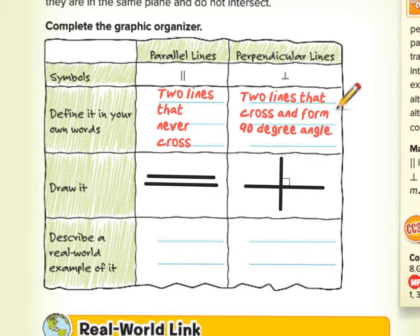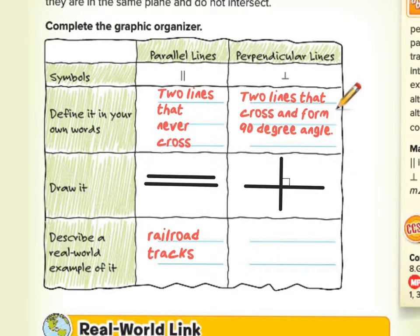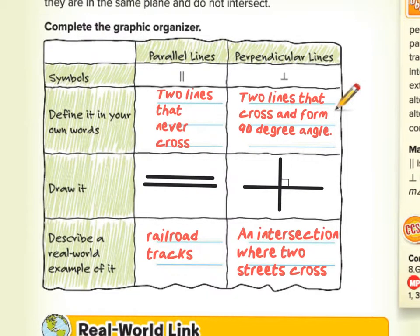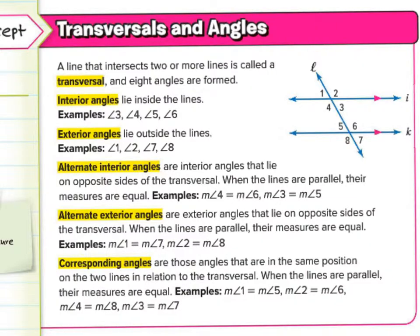For a real-world example of parallel lines, think of railroad tracks — perfectly straight railroad tracks that would be parallel. For perpendicular lines, think of an intersection where two streets cross. It looks just like a street corner.